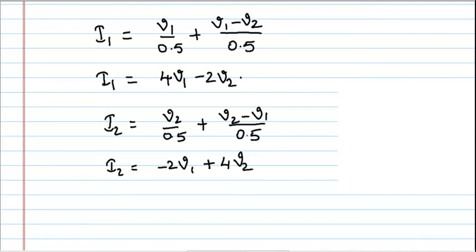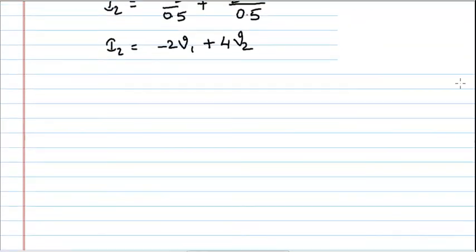Now for finding the admittance matrix, we know that the admittance matrix is I equals YV. In the input we have the current variables, and in the output we have the voltage variables.